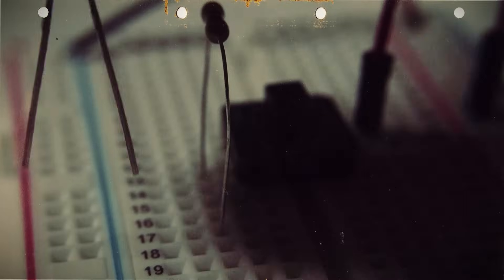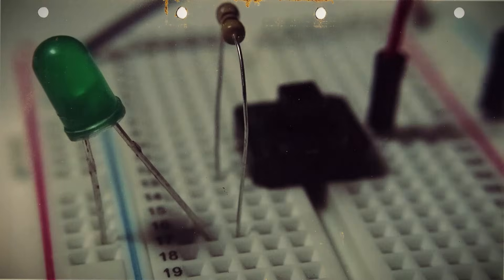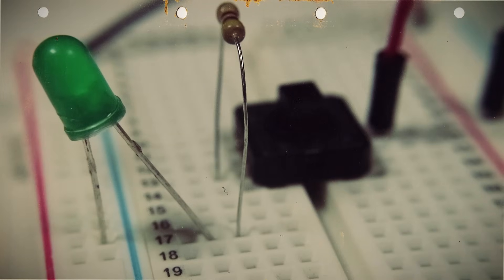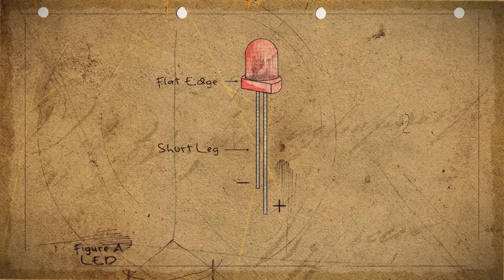Next, we can connect the positive leg of the LED to this resistor row and the negative side to the ground power source. How do you know which leg of the LED is positive and which one is negative?